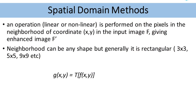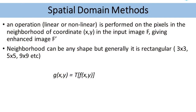In spatial domain methods, an operation — either linear or non-linear — is performed on the pixels in the neighborhood of a coordinate x, y. In a matrix, if I take one coordinate x, y, the neighborhood pixels are also considered from the input image, and a linear or non-linear operation is performed, giving an enhanced image f'. The neighborhood can be of any shape; a widely used shape is rectangular, which could be 3×3, 5×5, 9×9, and so on. So I have f(x, y) as my input image, a transformation gives me output image g(x, y), which is the enhanced image.